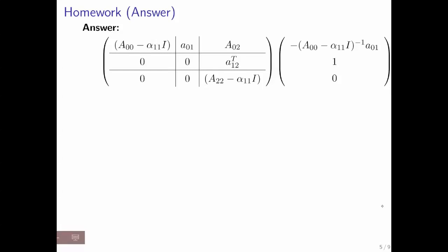And here's the answer. If you take A minus alpha 1 1 I, and you do that for the partitioned matrix, you get this.